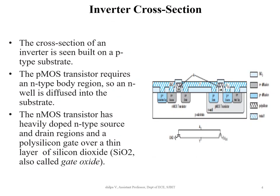This is the cross-section of an inverter which corresponds to the schematic we studied in Module 1. The inverter is built on a p-type substrate. The pMOS transistor requires an n-type body region, so an n-well is created. The nMOS has heavily doped n-type source and drain regions.